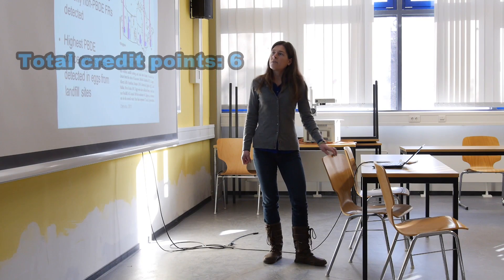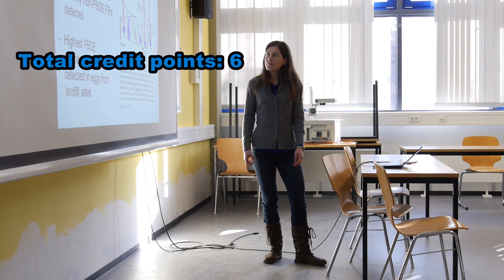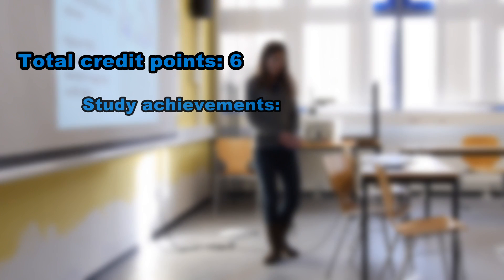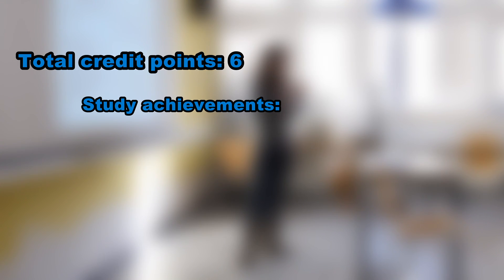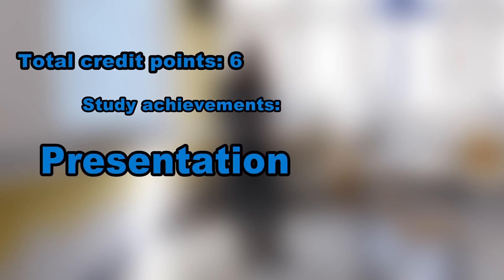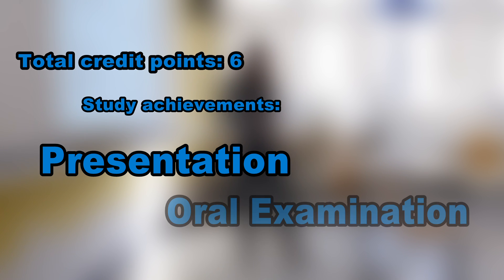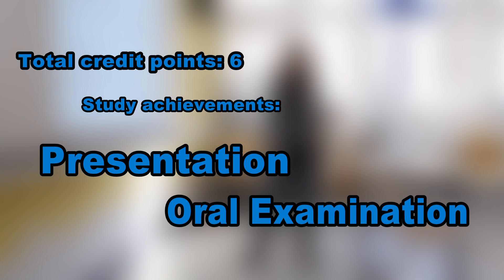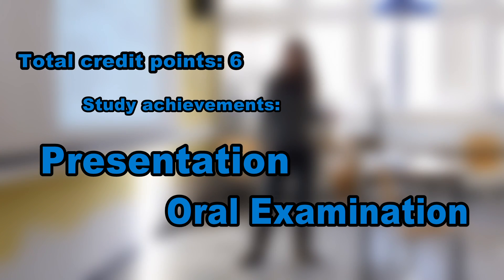To receive six credit points for the Principles of Ecotoxicology module, students give a presentation in one of the two lectures and take an oral exam in the other.